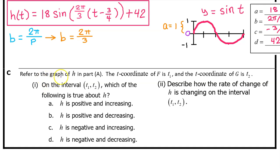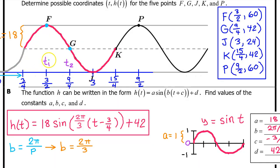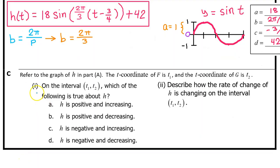Part C. Refer to the graph of h in part A. The t-coordinate of F is t1 and the t-coordinate of G is t2. So this is t1 and this is t2.